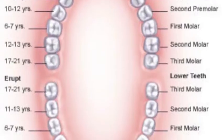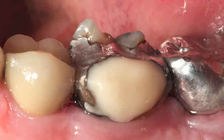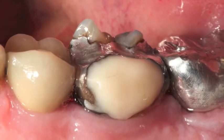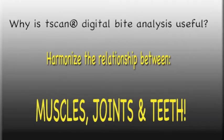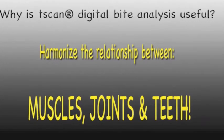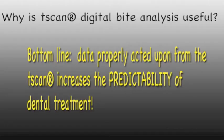Teeth are shaped as they are for a reason. Faulty dentistry creates contours that throw the alignment off between the muscles, joints, and teeth. Even the finest dental work, even properly aligned, can throw off this delicate balance. This is where the T-scan application shines — increasing the predictability of dental treatment by allowing the dentist to control the forces of the patient's mouth.